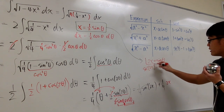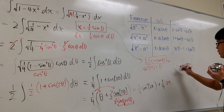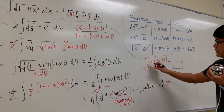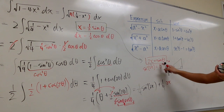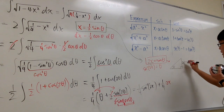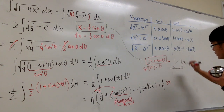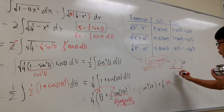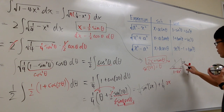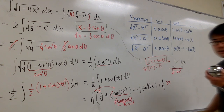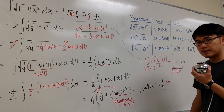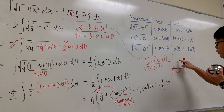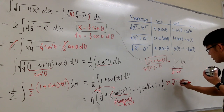We draw a right triangle with angle θ. Since sinθ = 2x/1, the opposite side is 2x and the hypotenuse is 1. By the Pythagorean theorem, the adjacent side is √(1 − (2x)²) = √(1 − 4x²). Therefore cosθ = adjacent over hypotenuse = √(1 − 4x²) over 1. Substituting, we multiply by √(1 − 4x²).